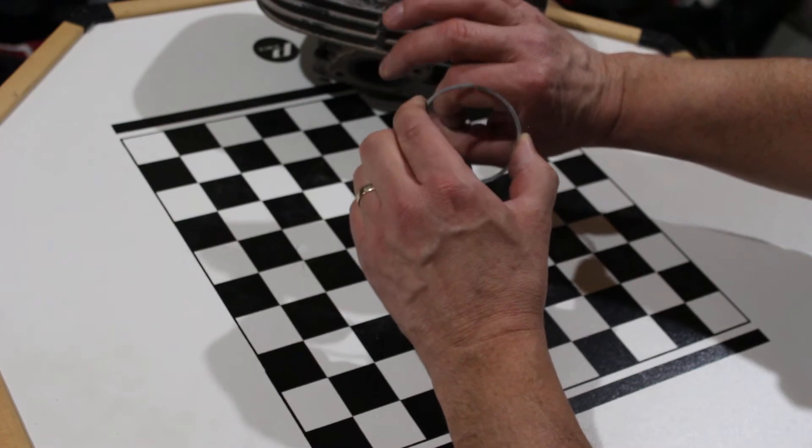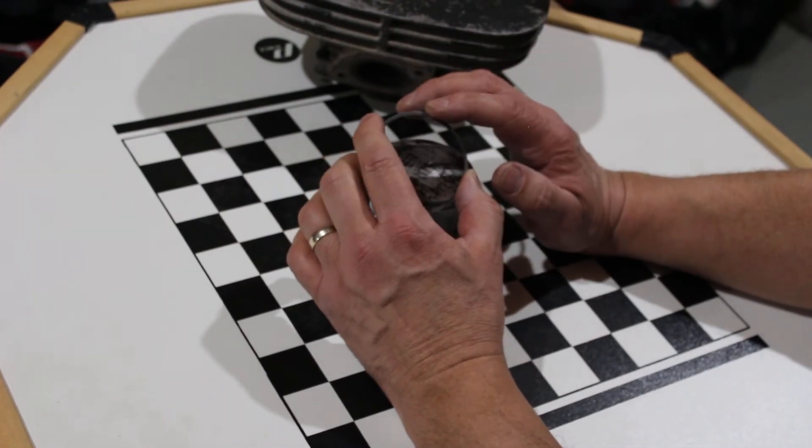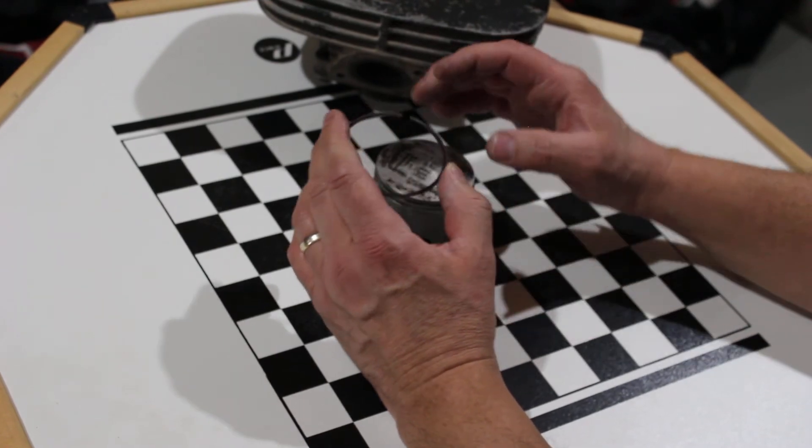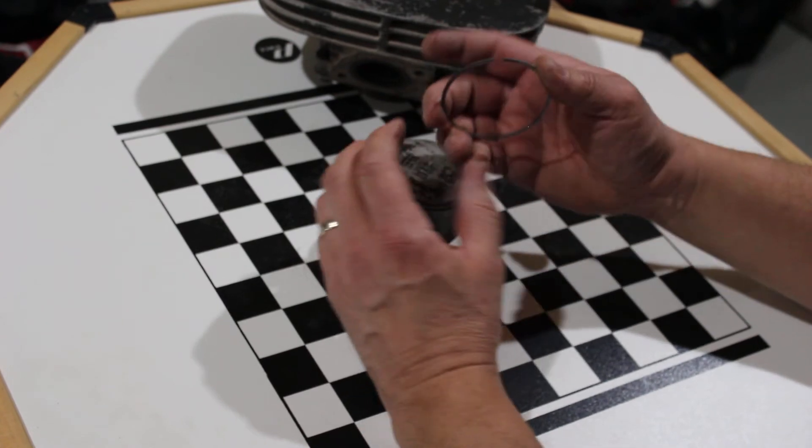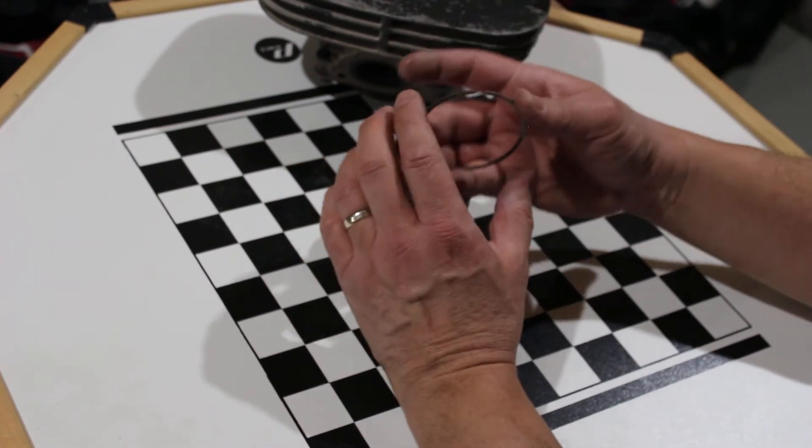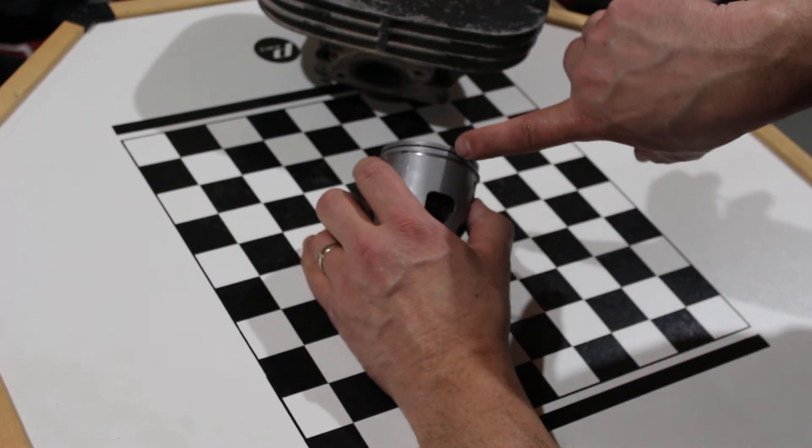And invariably what happens is that it breaks the rings. So two-stroke pistons are designed so that they cannot rotate around. They have an actual pin right there for that ring.